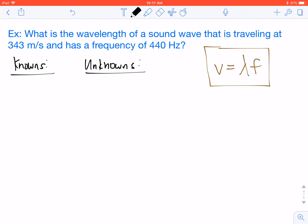See in the top right here, I have written down the wave speed equation. V equals lambda times f. V stands for the velocity, or how fast the wave is traveling. Lambda stands for the wavelength, and f stands for the wave's frequency.